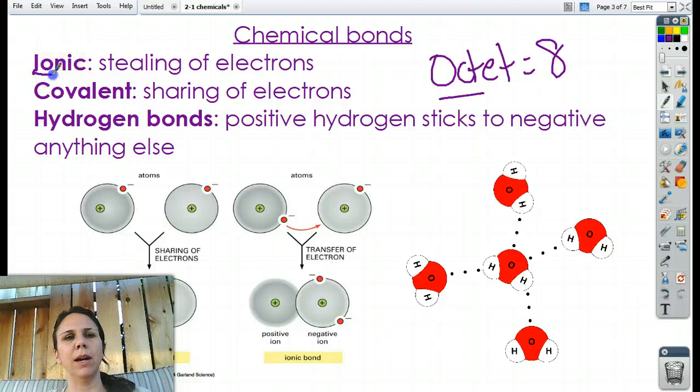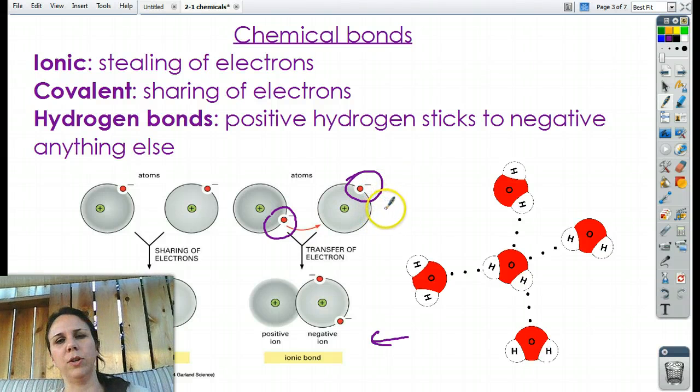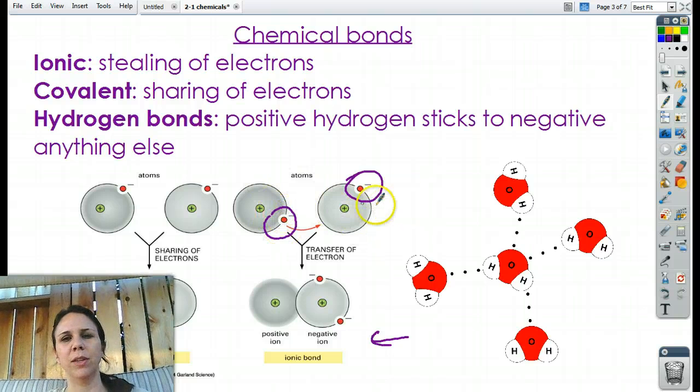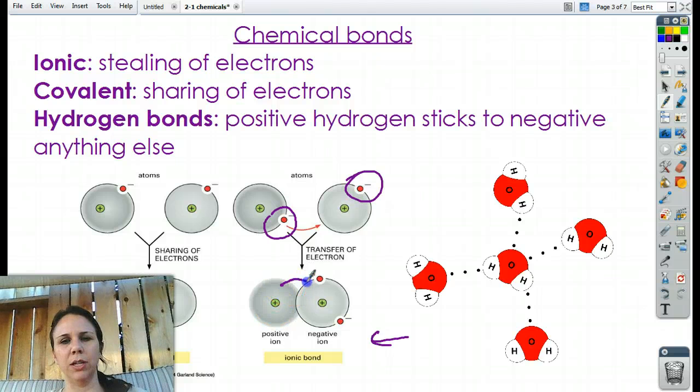So if two atoms get together by stealing each other's electrons, we call that an ionic bond. And so down here, this one right here, you can see what's happening. He's got an electron he's not necessarily wanting. He's got an electron he likes and really would like one more to complete his collection. And so it's kind of like, you know, when you guys are trading Yu-Gi-Oh cards or something like that. You know, he's got an extra one of these, and he needs that one, so here, how about I just take that from you? Okay, no problem.